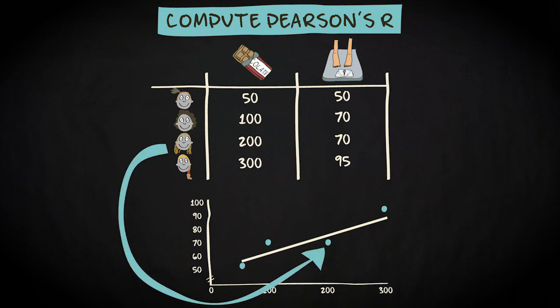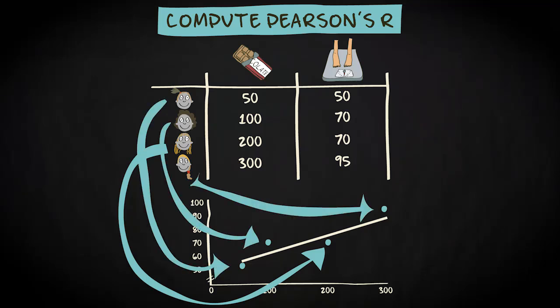This woman consumes 200 grams of chocolate per week and weighs 70 kilograms. She is represented by this circle. The other three circles represent the other individuals you see in the data matrix.